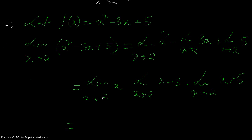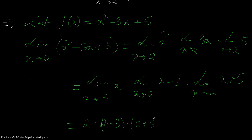Since x tends to 2, I get the value 2 in place of x. So I get 2 here. If I replace x with 2 in x minus 3, I get 2 minus 3. Then the other term, with x equals 2, gives 2 plus 5. That comes to 2 into (2 minus 3), which is minus 1, into (2 plus 5), which is 7. So I get 2 times negative 1 times 7, giving minus 14.